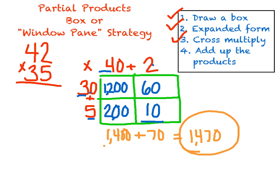That is my answer. We did it. So 42 times 35 is 1,470. That's it. Good luck.